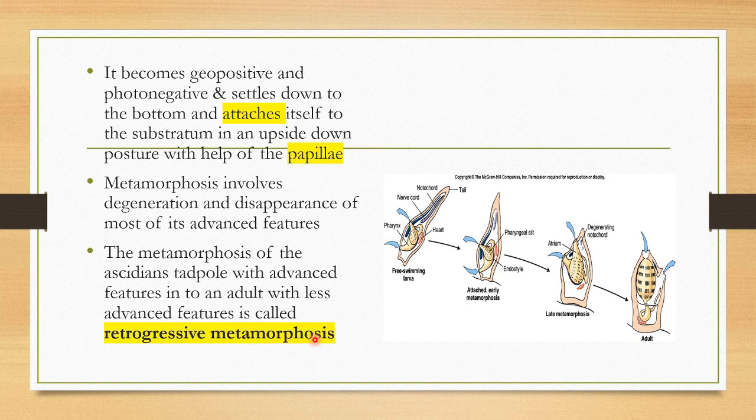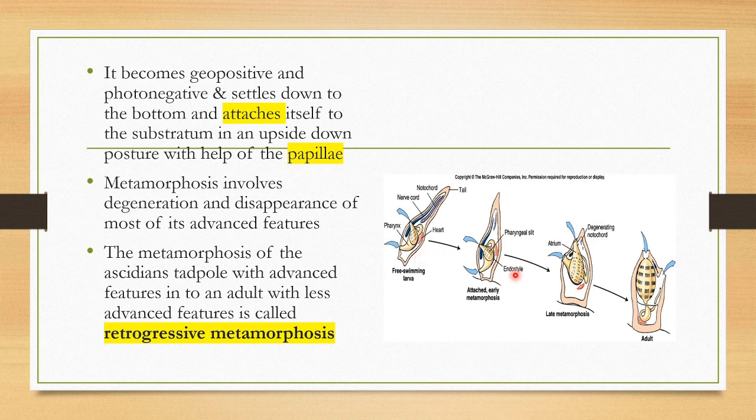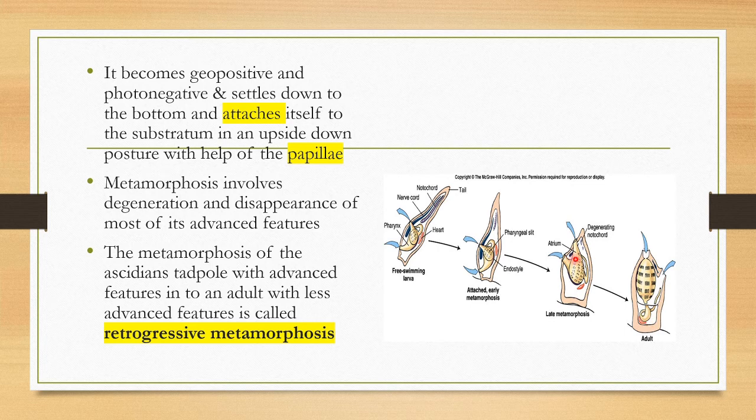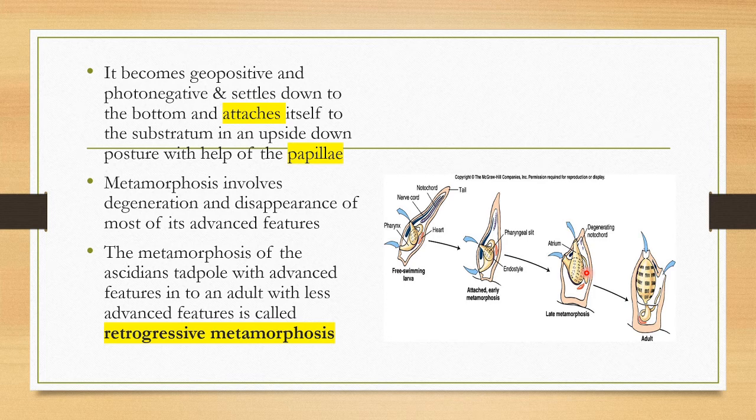It's not progressive but retrogressive because it loses most of the advanced features as it proceeds into the adult. That's why it's called retrogressive metamorphosis. It loses its nervous system, it loses its nerve cord, and notochord, etc.